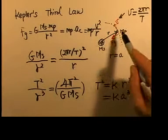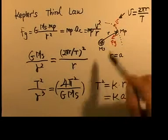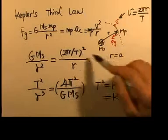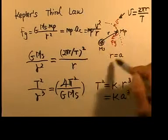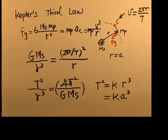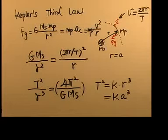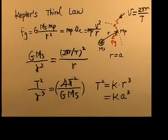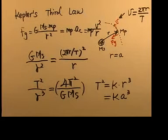Calculating k for the solar system — with planets rotating around the sun — we plug in the mass of the sun and find from the table listing all nine planets that the constant k is very close to 2.9 times 10 to the negative 19. That is in Table 13.2 on page 399 of your textbook.